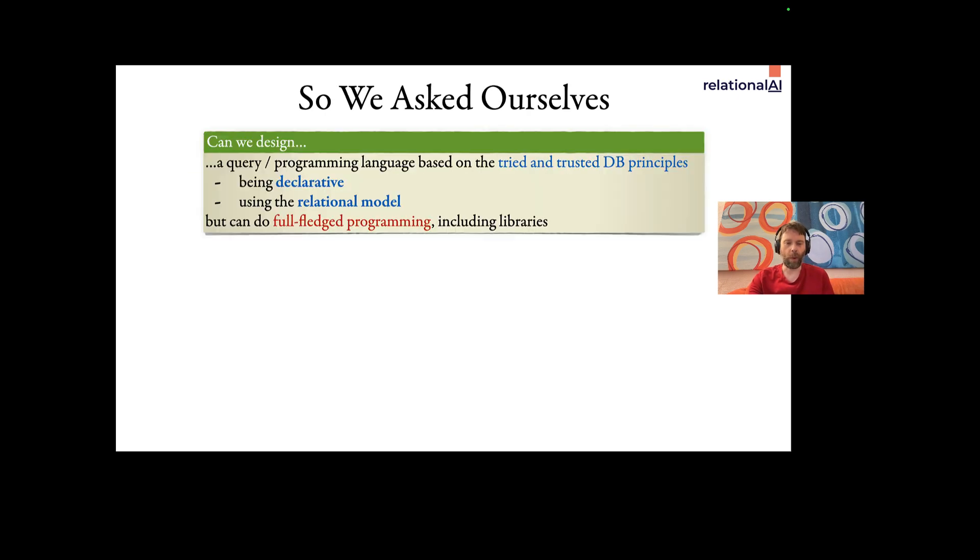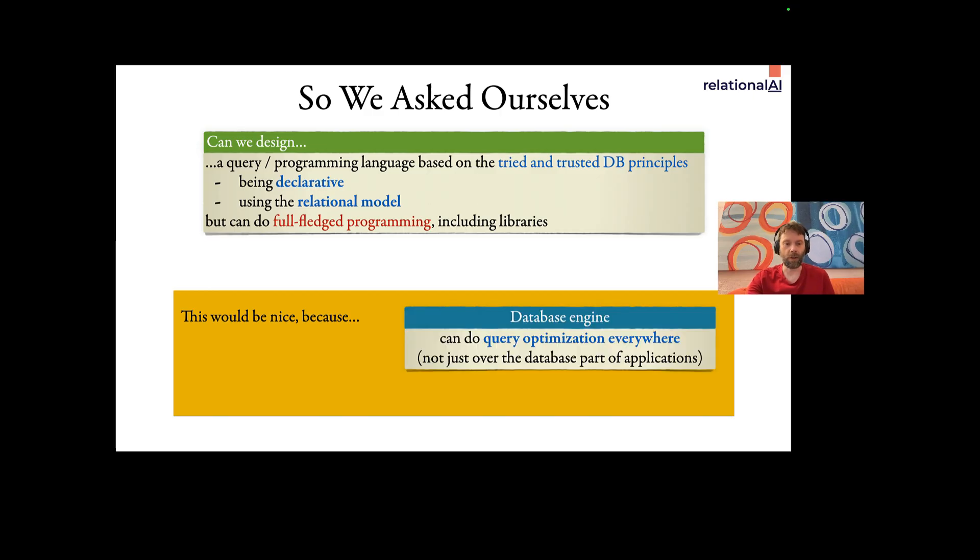This led us to the question of whether we can design a language that's based on our tried and trusted database principles, namely being declarative and using the relational model. So embracing the main ideas that SQL is built on, but we want to do full-fledged programming, including libraries. This would be cool to have, because then the database engine with its query optimizer can see entire applications and can do optimization everywhere, not just over the database part of applications.